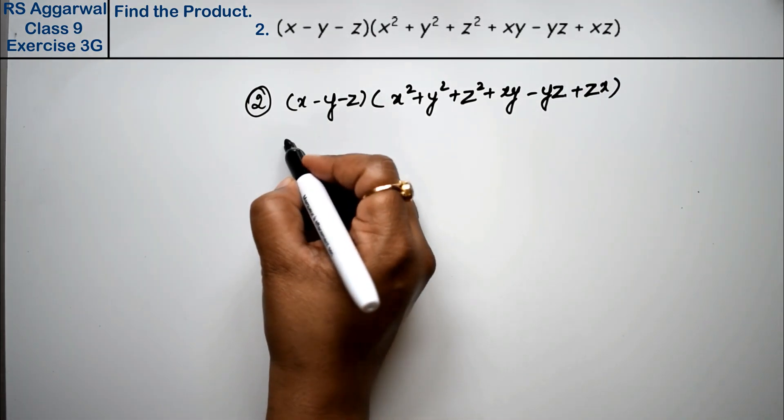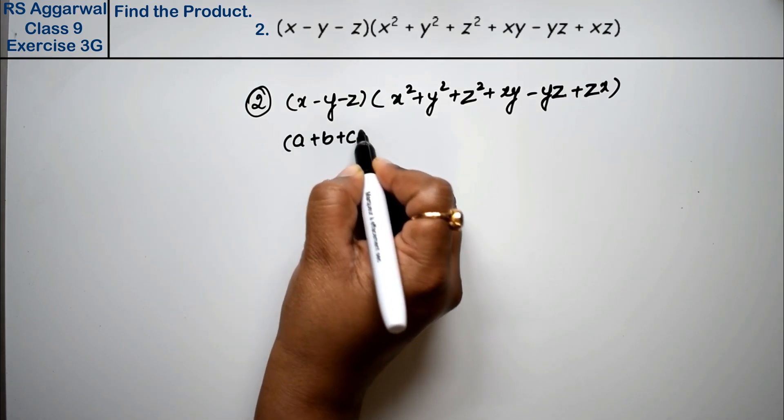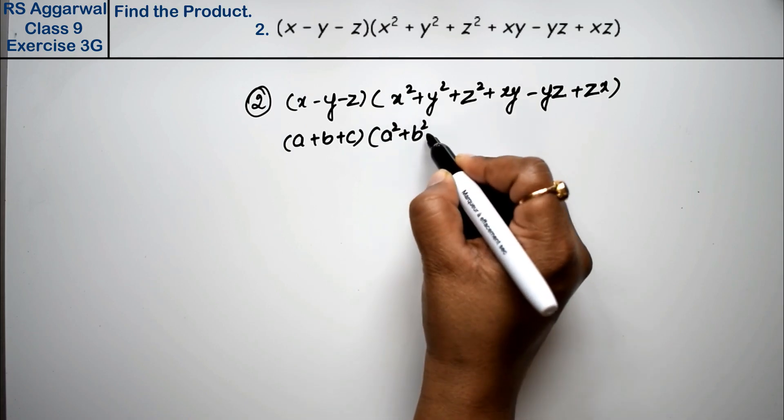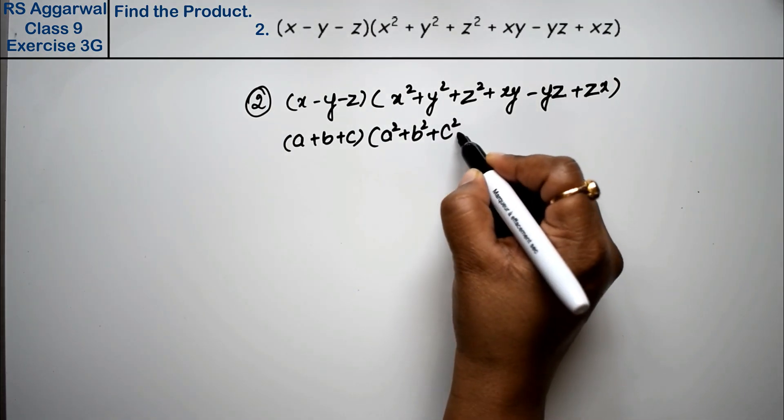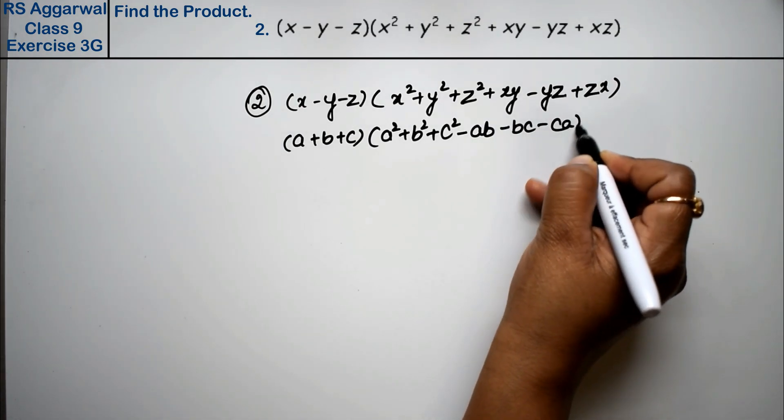Now see, what was our formula? (a + b + c)(a² + b² + c² - ab - bc - ca).